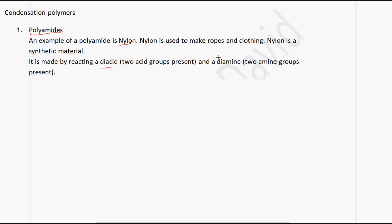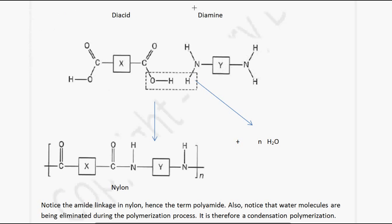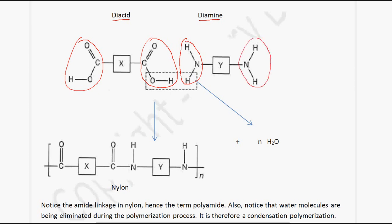Nylon is made by reacting a diacid with a diamine. A diacid has two acid groups present, and a diamine has two amine groups present. The OH from the acid and the H from the amine are eliminated to give water. What we get is the amide bond, also called the amide linkage, being produced.